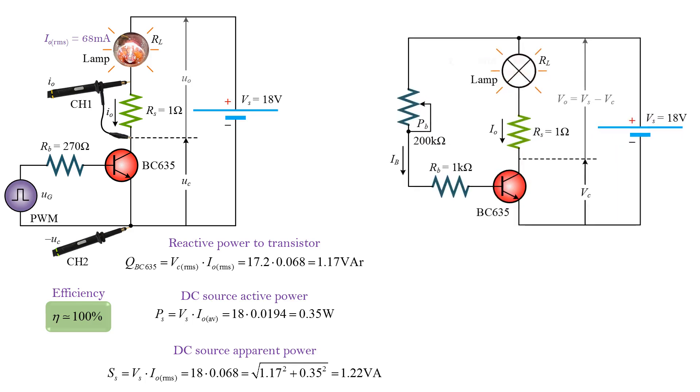In the conventional circuit, the DC source supplies only the active power of 1.22 watts, which is equal to the apparent power of the switching converter. The efficiency is just 33%.